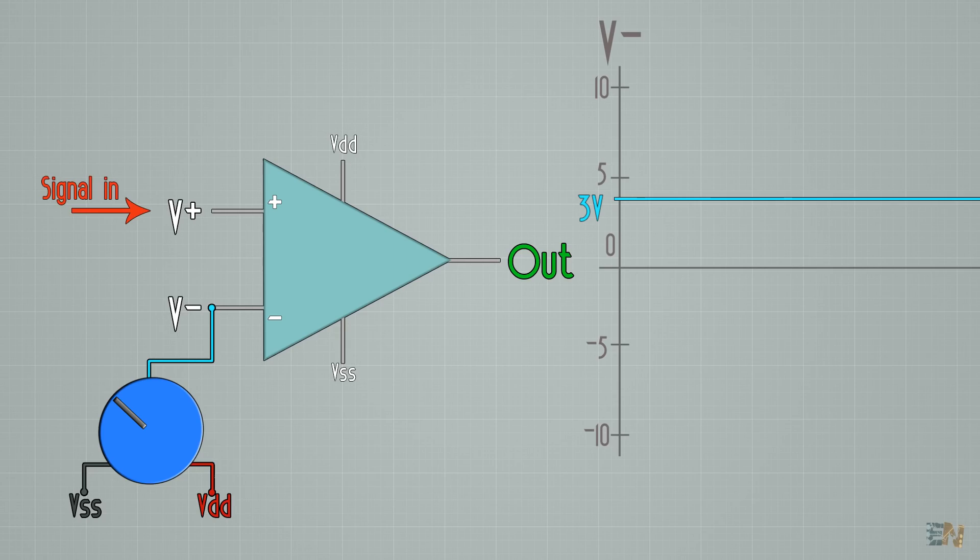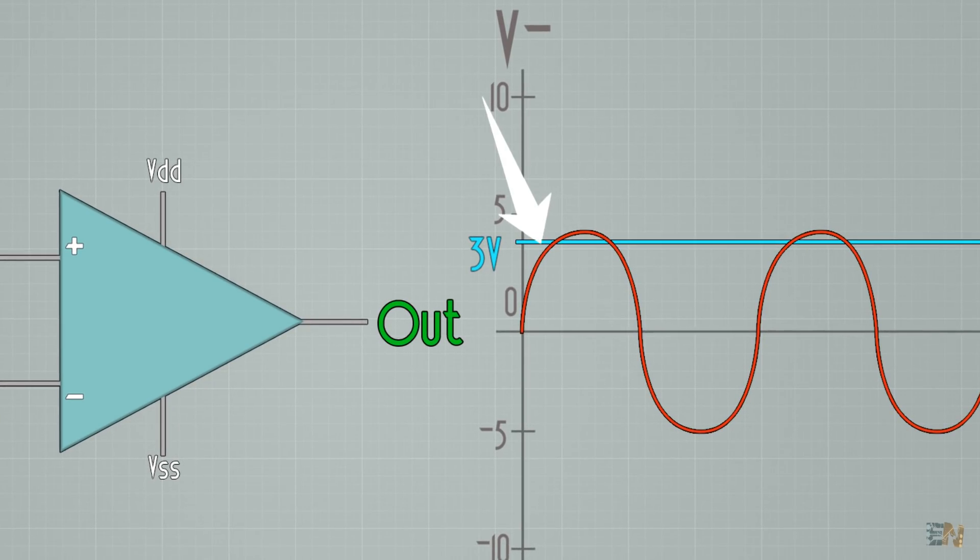Now, at the positive input, we have a signal that oscillates and we want to read that. So, we want each oscillation to become a square wave. Each time the input is higher than 3 volts, we have a high pulse at the output. That's pretty easy, right?